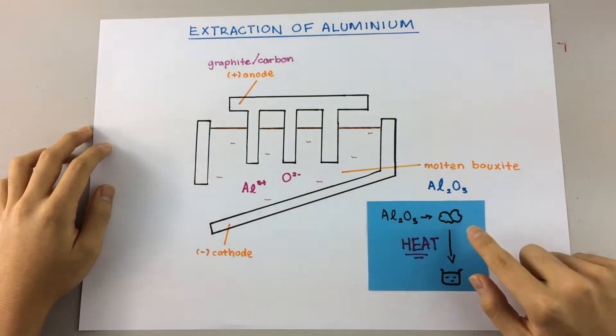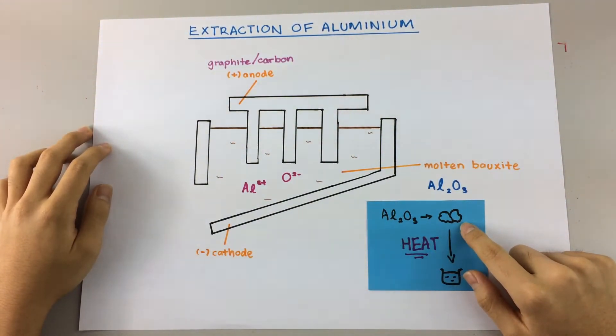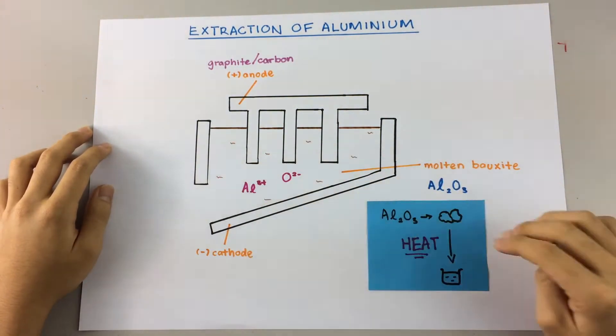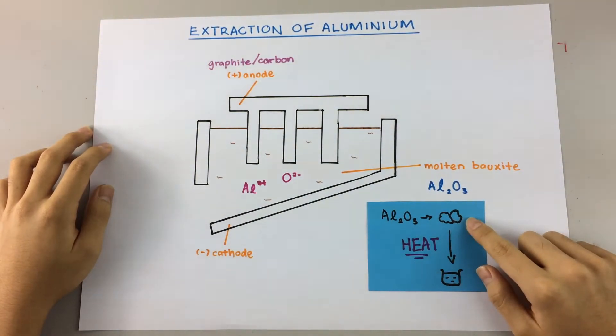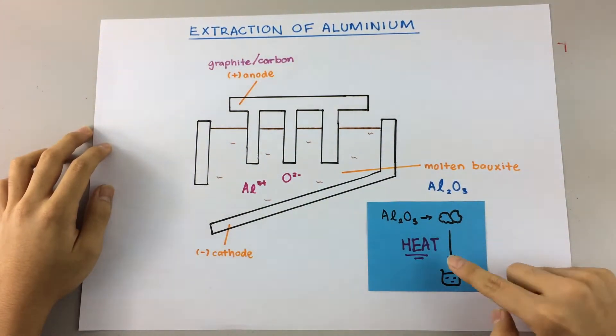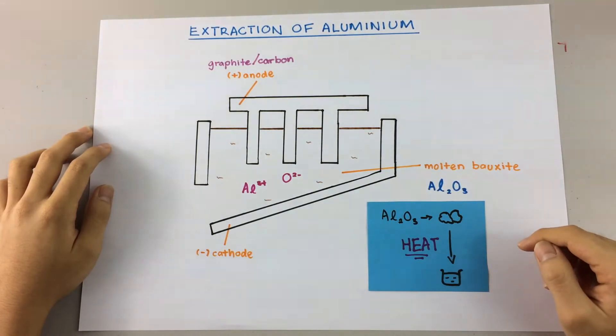Now aluminum oxide comes in the form of a solid, and in order for electrolysis to work, we need to melt this solid to a liquid, so that electricity can pass through and we can extract the aluminum. But in order for the solid to melt, we need lots and lots of heat. It takes about 2,000 degrees Celsius to melt aluminum oxide. And this is expensive and not very practical.